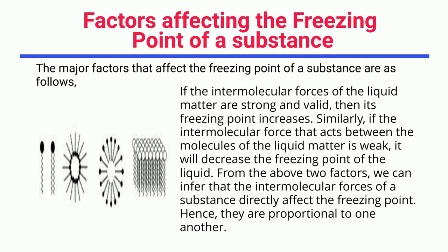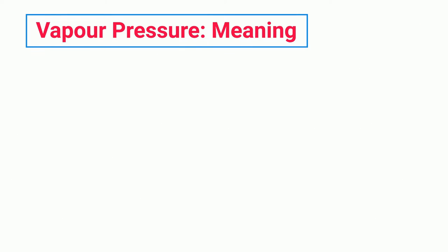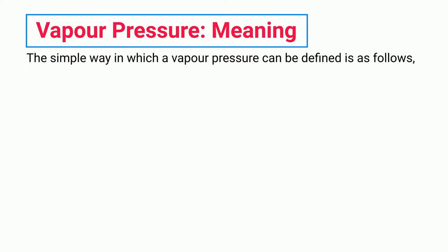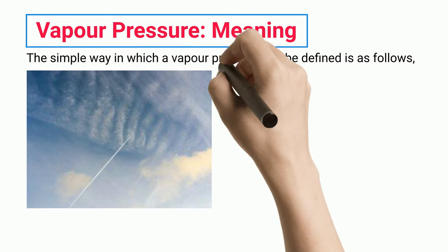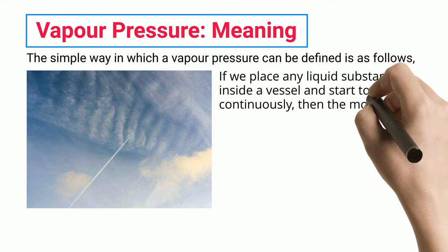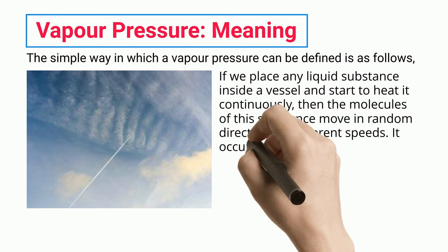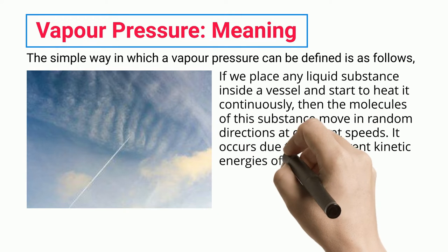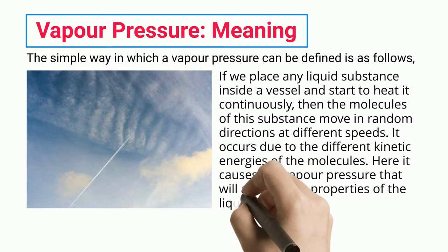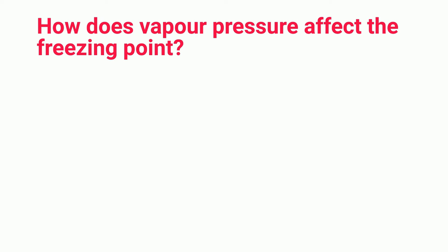Hence, intermolecular forces and freezing point are proportional to one another. Vapor pressure meaning: the simple way to define vapor pressure is as follows. If we place any liquid substance inside a vessel and start to heat it continuously, then the molecules of this substance move in random directions at different speeds due to their different kinetic energies, and this causes vapor pressure that will affect other properties of the liquid.